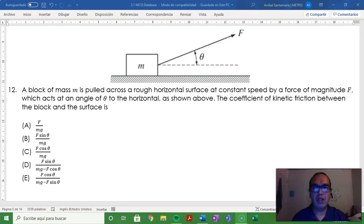Number 12. A block of mass M is pulled across a rough horizontal surface at constant speed by a force of magnitude F, which acts at an angle of theta to the horizontal, as shown above.